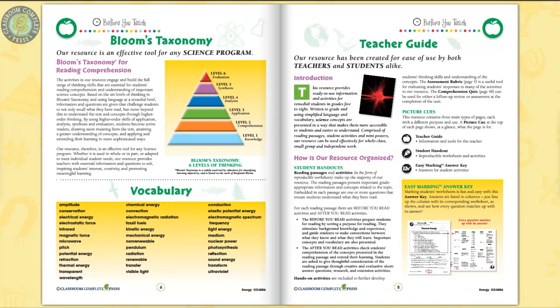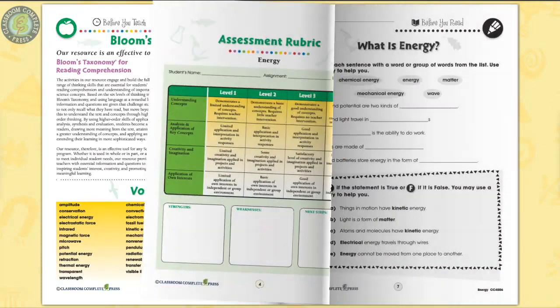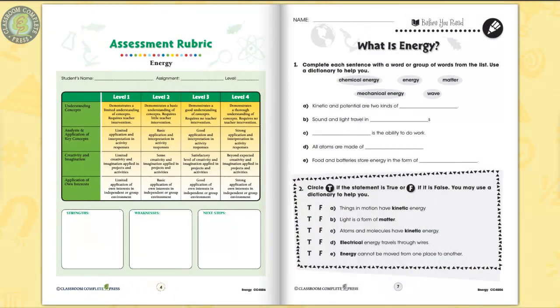We also include an assessment rubric, a critical thinking skills rubric, and a vocabulary list. Every chapter has a Before You Read section to see what learners already know about the topic, ideal for differentiated learning.